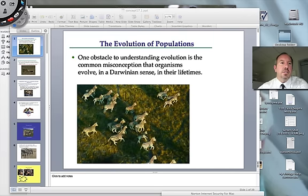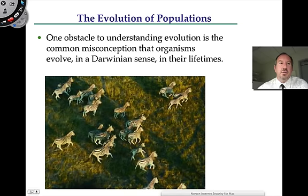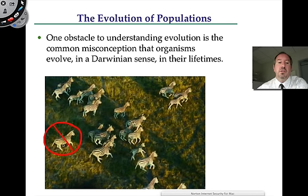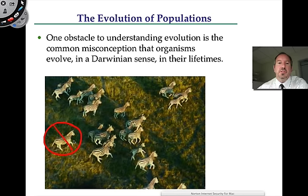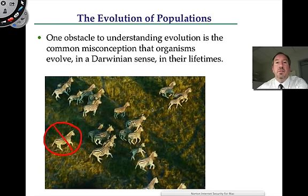Let's say that the lion eliminates one zebra for a variety of reasons — maybe its hearing wasn't very good, maybe it's running very slowly, maybe its stripe pattern wasn't very good, maybe it was sick or hurt its leg. When an organism is eaten, it's not going to make any changes. Even if this zebra became more muscular because it was running around a lot, that doesn't mean its children are going to inherit that. One of the major obstacles to understanding evolution is the misconception that organisms evolve.